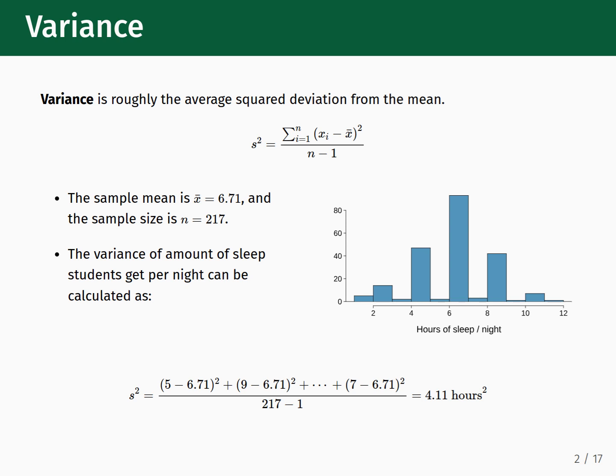There are different ways to measure the variation of a data distribution. One such statistical measure is called the variance. The variance is computed using the formula at the top of this slide, and can be thought of as being roughly equal to the average squared deviation from the mean.